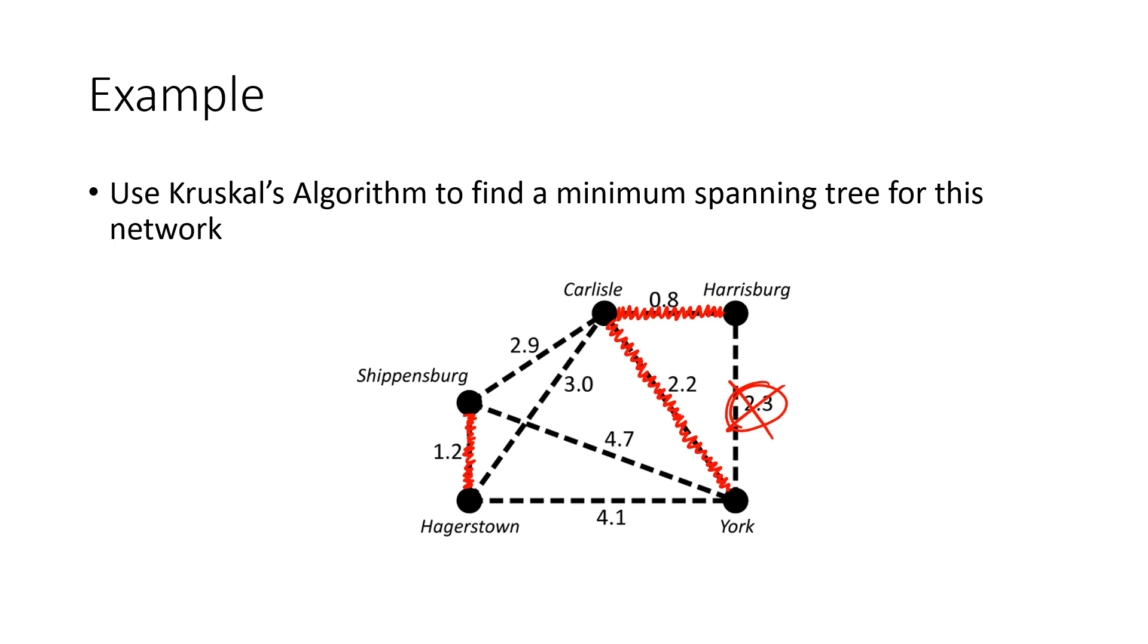The next lowest edge is 2.9 from Shippensburg to Carlisle. So I add that edge because I wouldn't create a circuit there. And now I'm actually done because I've created a network that connects every city to every other city, even if I have to walk through other cities to get there. Notice that this 3.0, 4.7, 4.1—I never considered those edges because I finished my problem before I even got to that point.